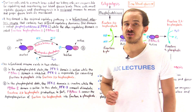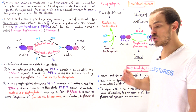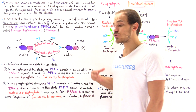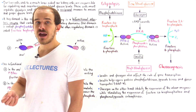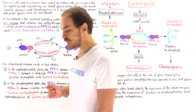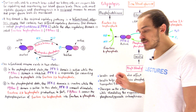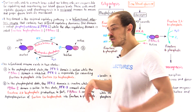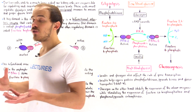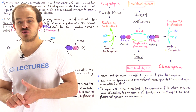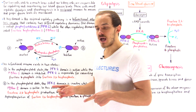One such process is gluconeogenesis, which actually uses up a certain amount of ATP and GTP molecules. Liver cells and kidney cells can undergo gluconeogenesis, and they do actually undergo gluconeogenesis to a very large extent compared to other cells.